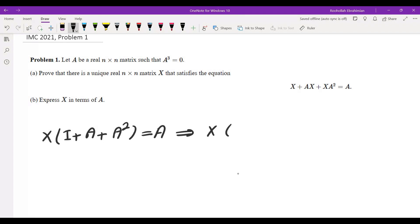After that I could multiply both sides by I minus A and that would give me difference of cubes. It's natural to multiply by that term, and the right side becomes A times I minus A. Since A cubed is 0, that gives me X equals A minus A squared.